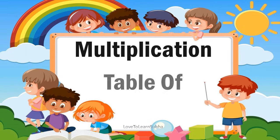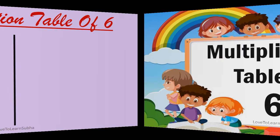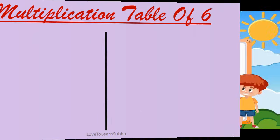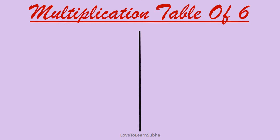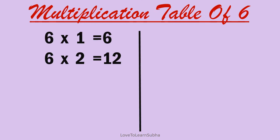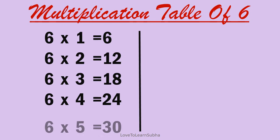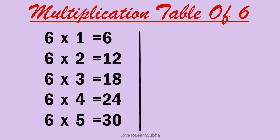Multiplication table of 6. 6 ones are 6, 6 twos are 12, 6 threes are 18, 6 fours are 24, 6 fives are 30.